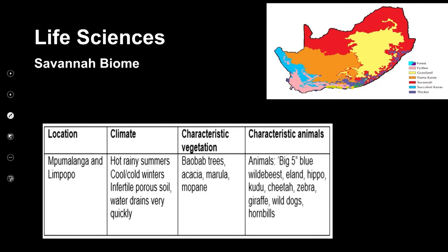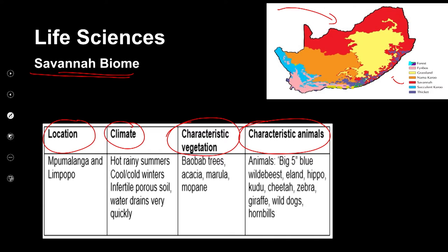When we look at the savannah biome, it's indicated in red on the map and is predominant along the Mpumalanga and Limpopo provinces. Savannahs are defined by hot, rainy summers and cold winters. The soil is infertile and porous, with water draining very quickly. The vegetation is characterized by baobab trees, acacia trees, and marula. We also typically find Mopane worms in these trees.